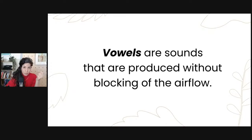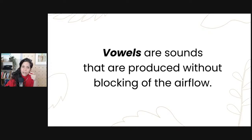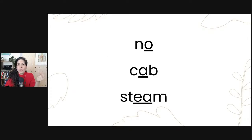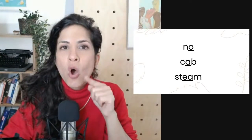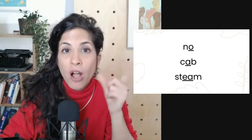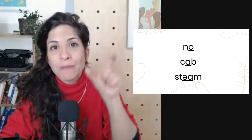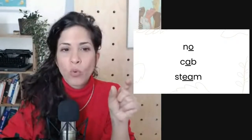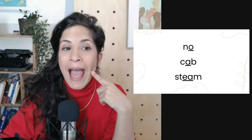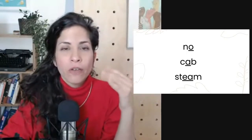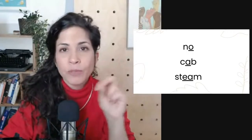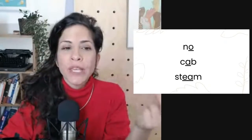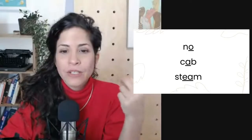Vowels, unlike consonants, are sounds that are produced without blocking the airflow. We're just changing the quality of it, but we're not blocking the airflow. For example, 'no' — the oh is a vowel, in this case a diphthong, a sound that changes from one position to another within the same syllable. A syllable is a unit within the word. In 'cab,' the ah is the vowel — I can hold it out forever, at least as long as I have breath. And in 'stream,' the E sound is a vowel, a high E sound.